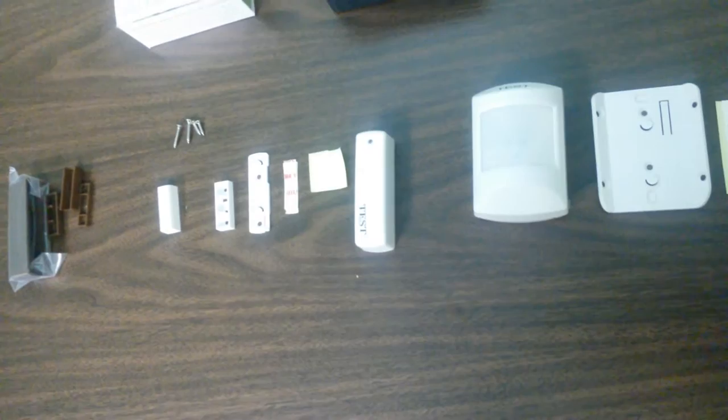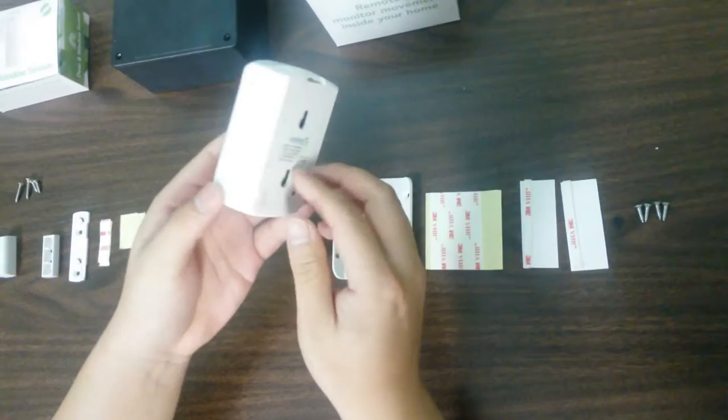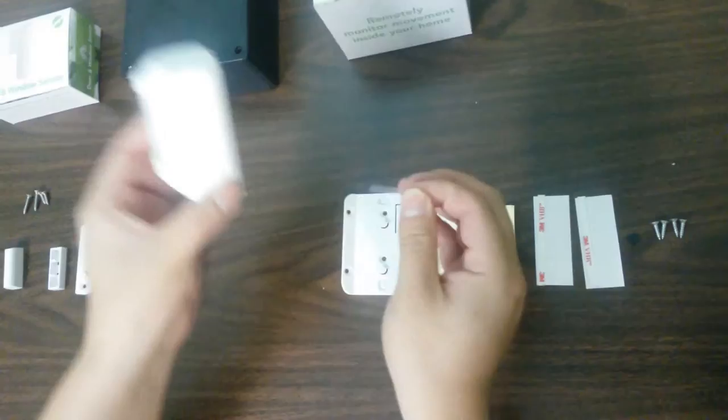This is the RENTLY Motion Sensor. We're going to show you how to add it to the hub. You're going to want to remove the plastic tab and place it on top or as near as possible to the RENTLY Hub. This may take up to two minutes.